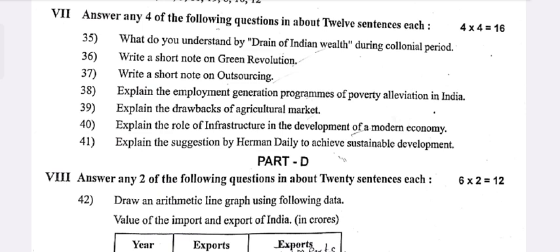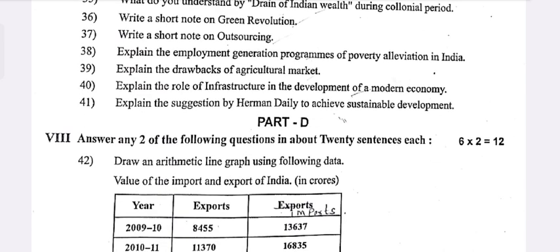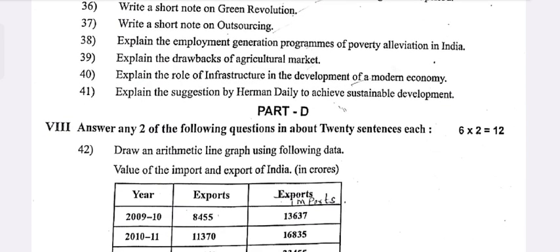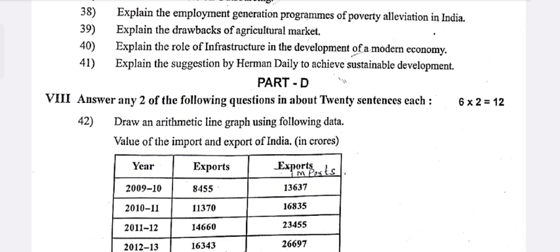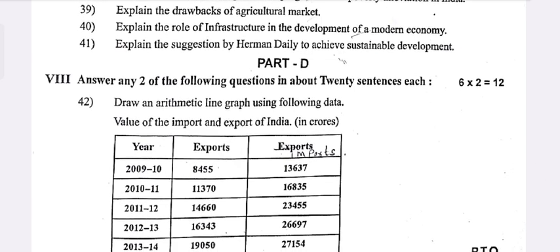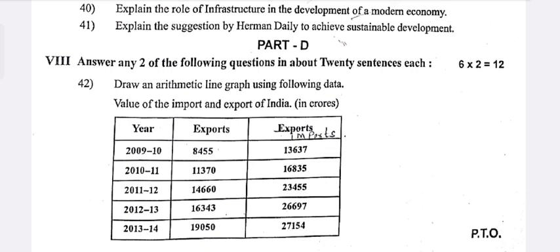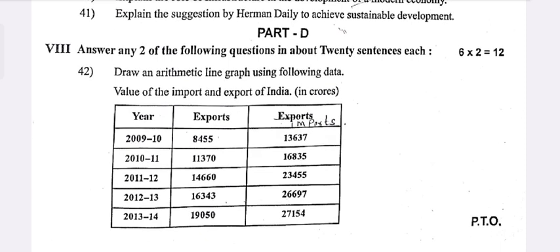Find the standard deviation of the following data: 8, 9, 15, 23, 5, 11, 19, 8, 10, 12. Part D: Answer two of the following questions. What do you understand by the drain of Indian wealth? Draw an arithmetic line graph using the following data — the matrix values: 3, 18, 10, 10, 30 — then 18, 11, 18, 22, 22.